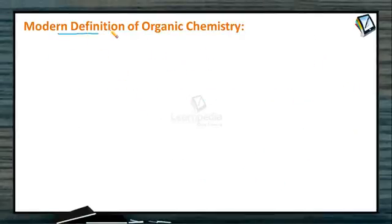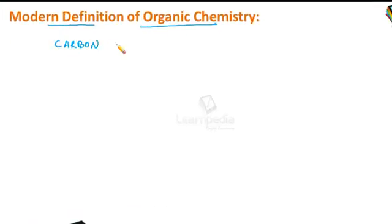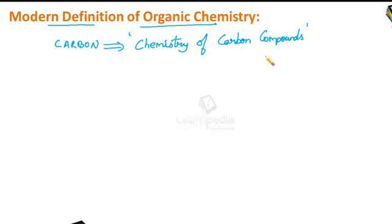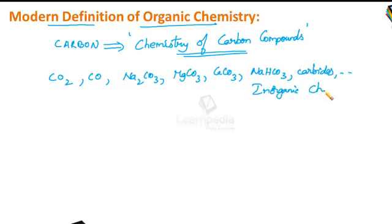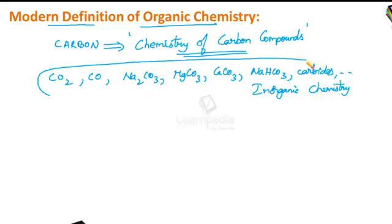Now, let us see the modern definition of organic chemistry. As carbon is the essential constituent of all organic compounds, organic chemistry is defined as the chemistry of carbon compounds. However, there are some compounds of carbon — such as carbon dioxide, carbon monoxide, all metal carbonates and metal bicarbonates like sodium carbonate, magnesium carbonate, calcium carbonate, sodium bicarbonate, and metal carbides — which are studied under inorganic chemistry. So even though they contain carbon, they are not considered organic compounds, and they become exceptions to the definition.